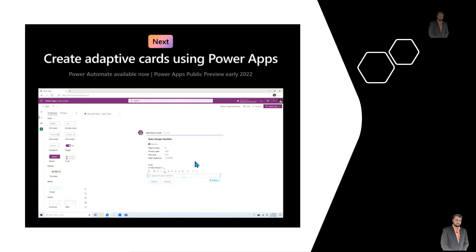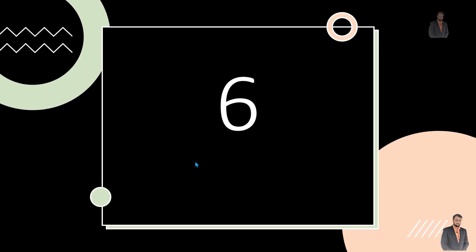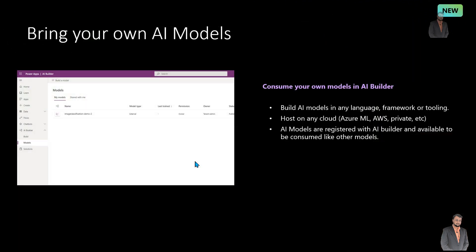This is one of the cool features which I am seriously waiting for. The sixth important news around Power Apps is that with AI Builder, you can now bring your own AI model. Earlier in AI Builder we had some specific AI models available, but now you can build your AI model in any language, framework, or tooling and host it on different clouds like Azure ML, AWS, or any private cloud. Those AI models are registered with AI Builder and available to be consumed.